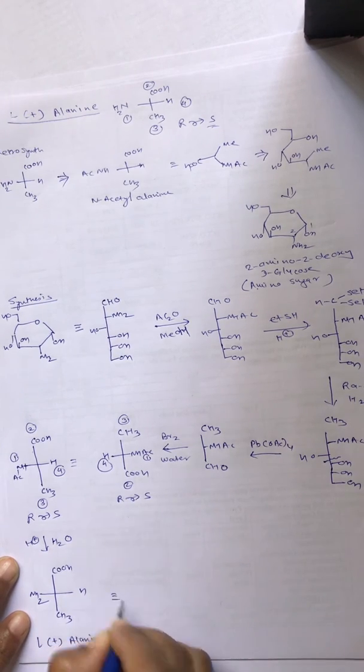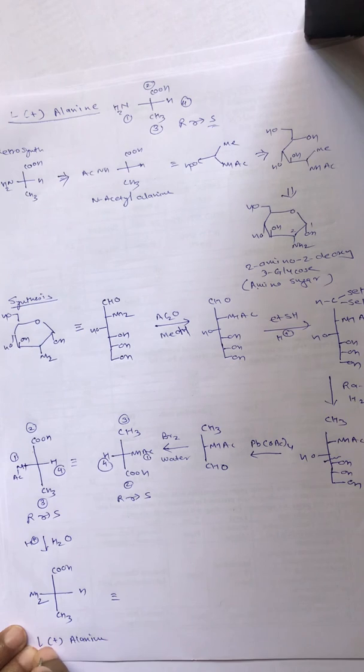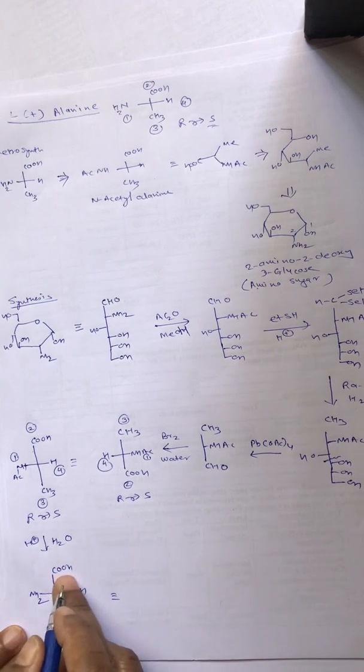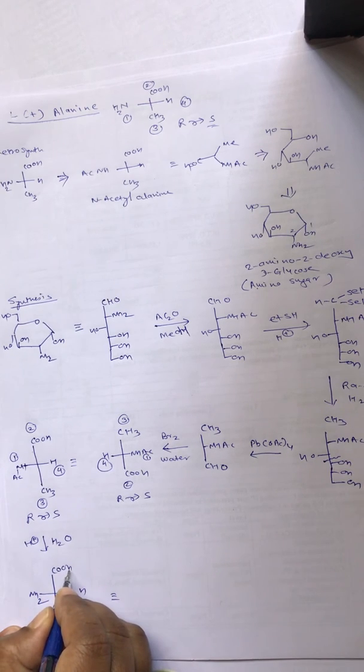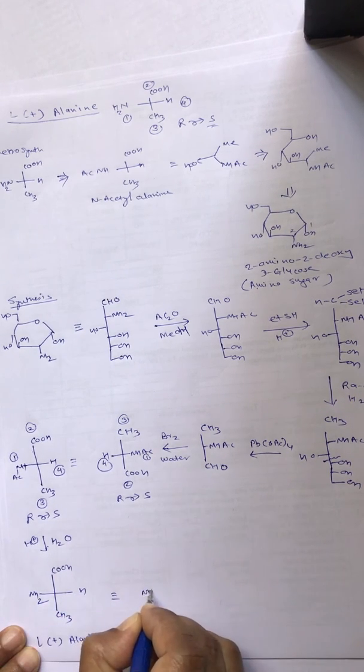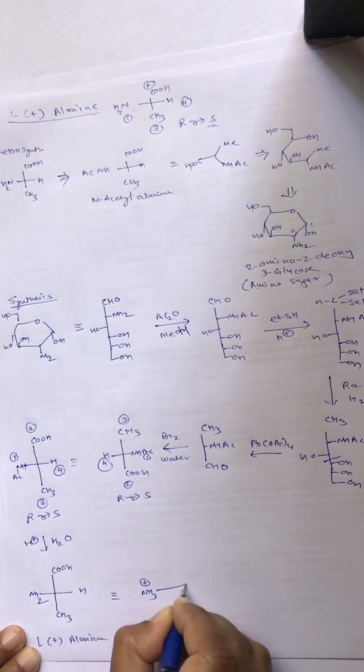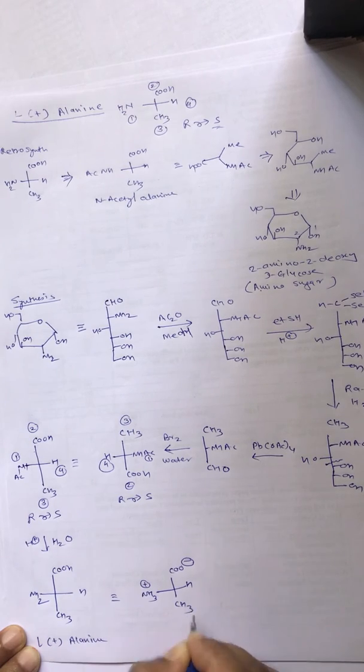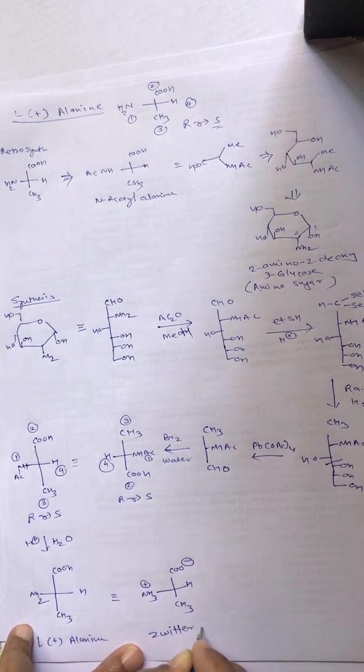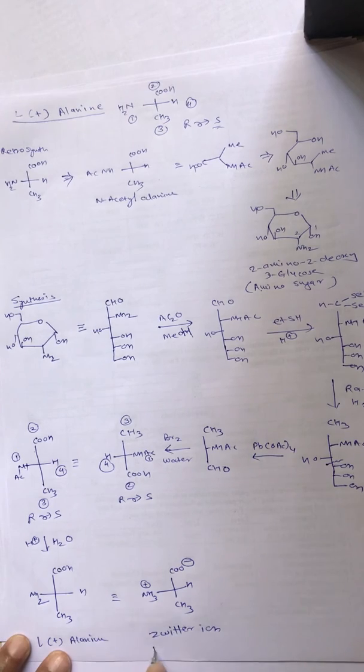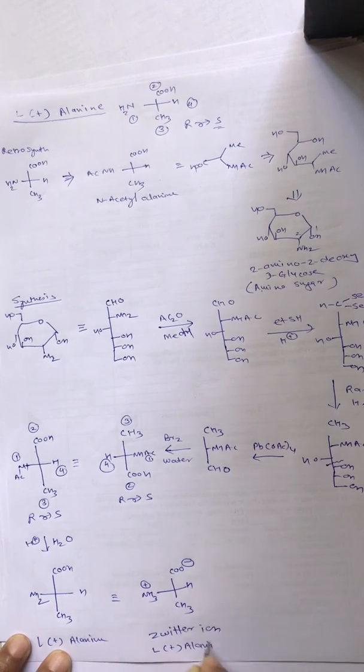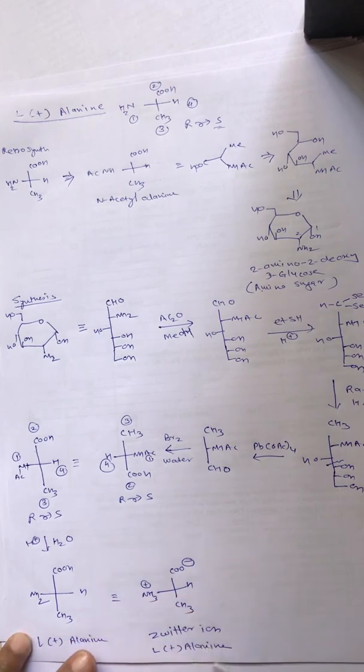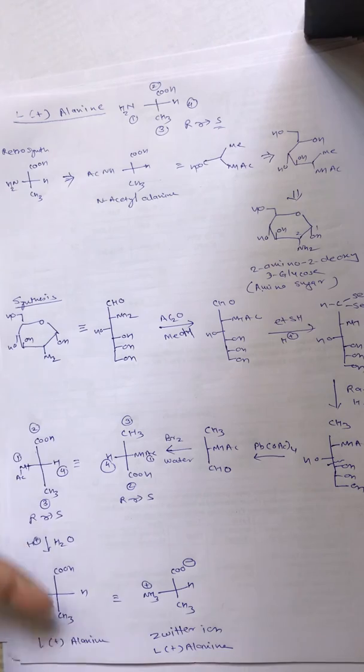You all should know that amino acids generally do not exist in this form because NH2 being basic and COOH being acidic, there is an intramolecular proton transfer. So we get NH3+-H-COO--CH3, which is also known as zwitterion. Actually, L-alanine exists in the zwitterion form. In fact, all amino acids are present in the form of zwitterions.